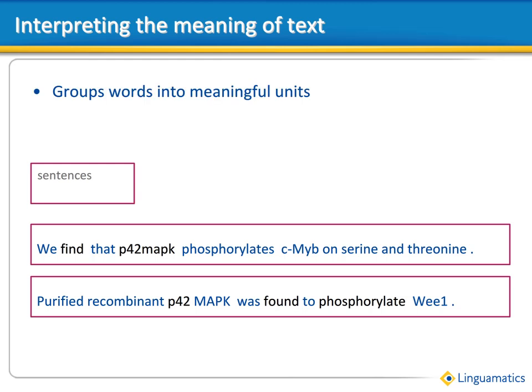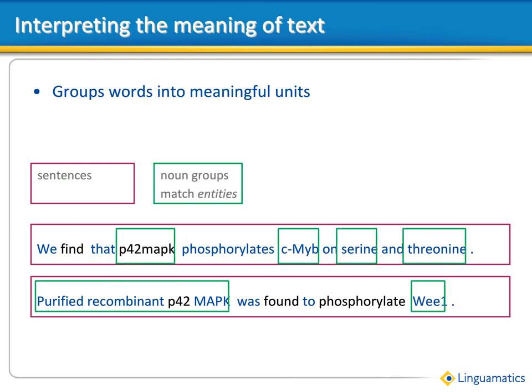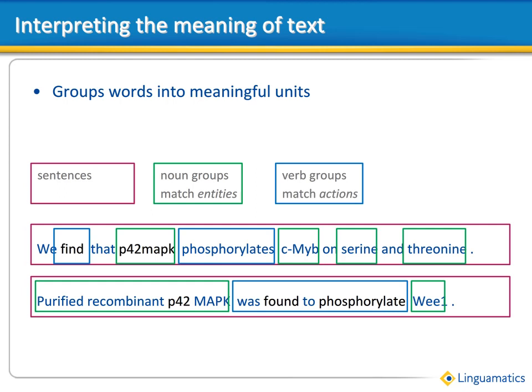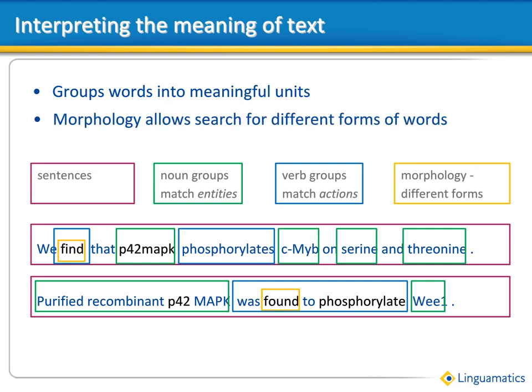Secondly, it identifies noun groups — entities or things. I2E recognises that P42 MAP K is a thing, but also recognises that purified recombinant P42 MAP K is a meaningful group of words describing one thing. Similarly, it recognises verb groups — actions which portray the relationship between the things. Phosphorylates is a verb group or relationship, but so is 'was found to phosphorylate.' Finally, I2E can recognise morphological variants of the same word — that is, the irregular word variations that are not picked up by most standard search engines. The ability to recognise morphological variants gives you a higher recall than you would normally get.